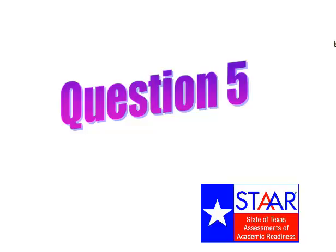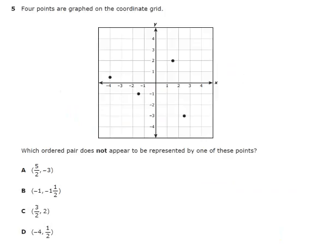Here's question five. Four points are graphed on the coordinate grid. Which ordered pair does not appear to be represented by one of these points? Pause the video now.